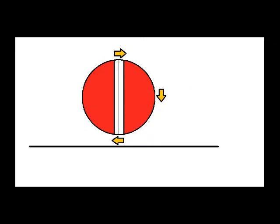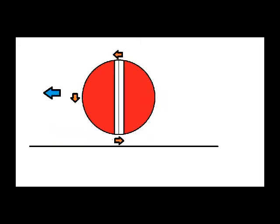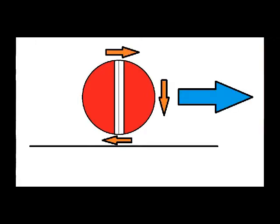That happens because of Newton's third law, which is: every action has an equal and opposite reaction. When the ball hits the ground, it exerts a force in the opposite direction of its spin, causing the ground to exert an equal force in the opposite direction, which is the direction of the spin. So the more you spin the ball, the more force it exerts on the ground and deviates more.